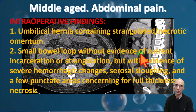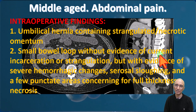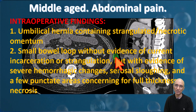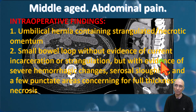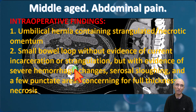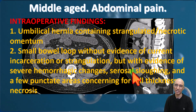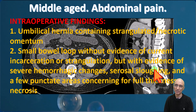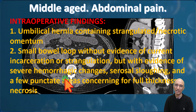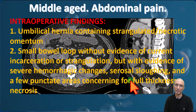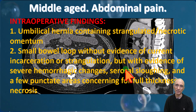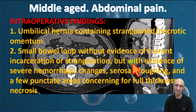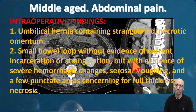The small bowel loop did not show evidence of incarceration or strangulation following mechanical reduction at the bedside. However, at surgery they noticed severe hemorrhagic changes, serosal sloughing, and punctate areas of full-thickness necrosis. The patient therefore had a short segment small bowel resection and closure of the umbilical hernia with a graft.